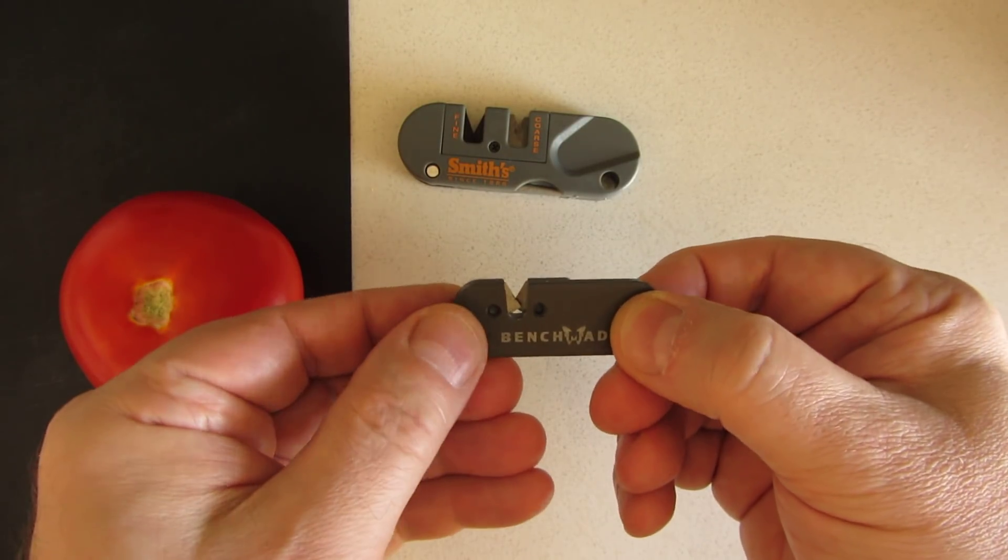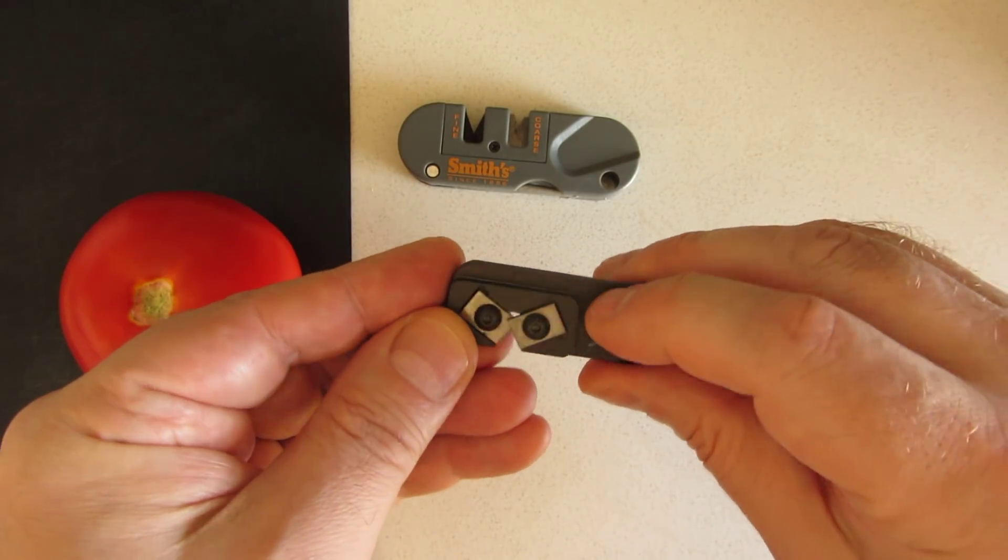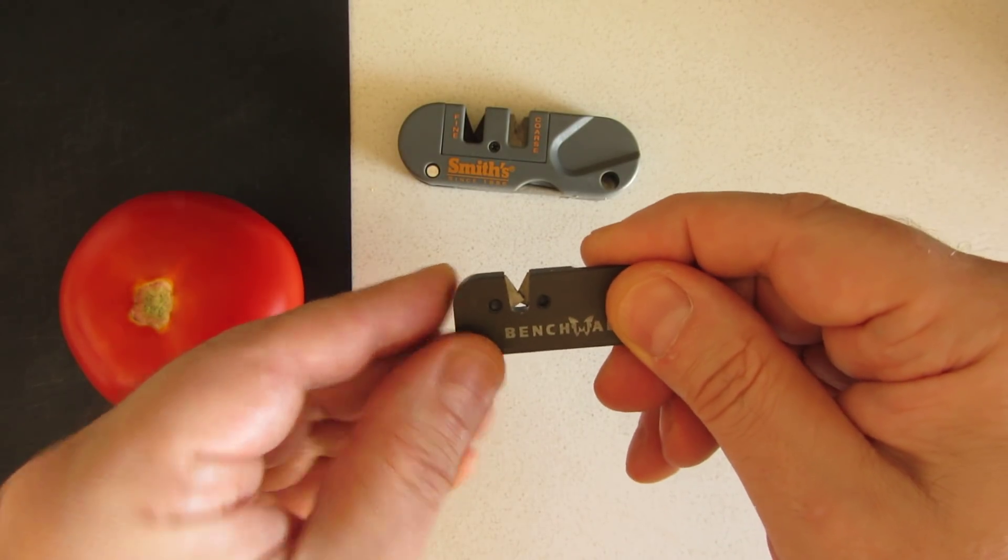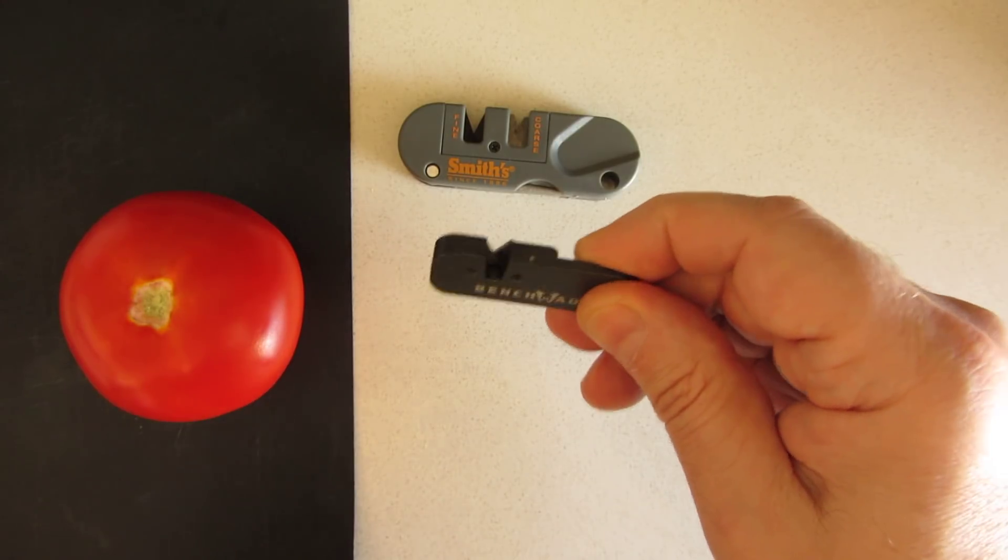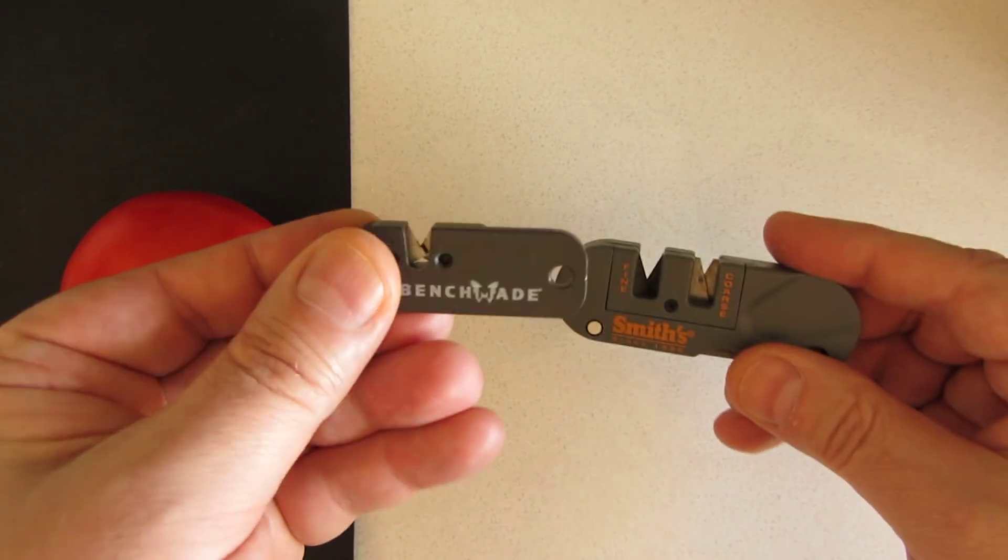You pull your knife blade through to sharpen it. These are, I guess, carbide blades to help whittle off the metal of the knife edge to make it very sharp. Here's one made by Smith's, but I'm going to try this Benchmade one.